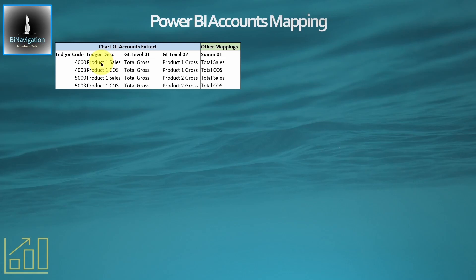They'll all have a ledger code and a ledger description, and most modern systems will have some level of tiering. Level one in this instance is gross profit, level two is product one and product two. But in any hierarchical structure you never get the best of all worlds — that hierarchy is not calculating sales and cost of sales totals, so we need to add in some other mappings on the right hand side. Those mappings could be used for anything you want to get in Power BI that's sourced in your ledgers.